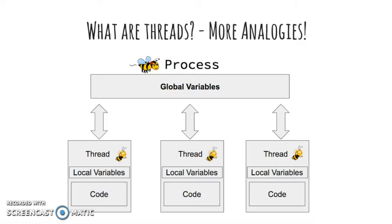Another way to think about threads is comparing the program structure to that of a beehive. In multi-threaded programs, the main program or thread acts as the queen bee assigning jobs, while the threads act as worker bees doing their assigned tasks. As you can see in this diagram, each thread shares access to a program's global variables but maintains its own local variables and code blocks.